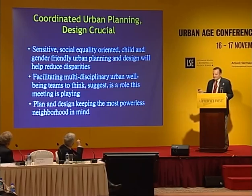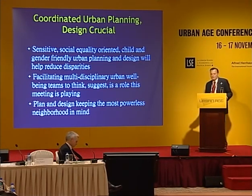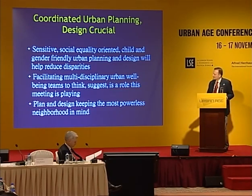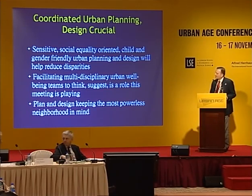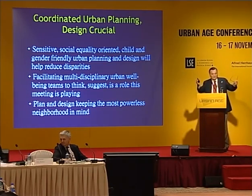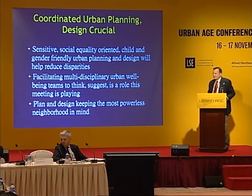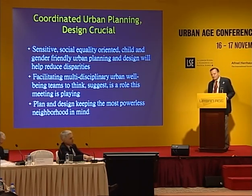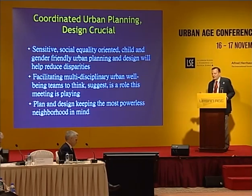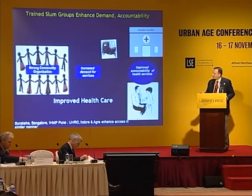The second approach is that coordinated urban planning and design is crucial. Sensitive, social equity-oriented, child and gender-friendly urban planning can help reduce disparities. Multidisciplinary urban well-being teams have an important role, and this meeting is playing that role. Planning and design that keeps the most powerless neighborhoods in mind will be helpful — if we reach the most powerless, we will automatically end up reaching slightly less powerless people as well.